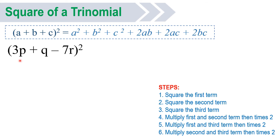Let's try another example. We have 3p plus q minus 7r, squared. First step: square the first term. First term is 3p. 3p times 3p, you will have an answer of 9p squared. Then square the second term. Second term is q. q times q, that will be q squared.